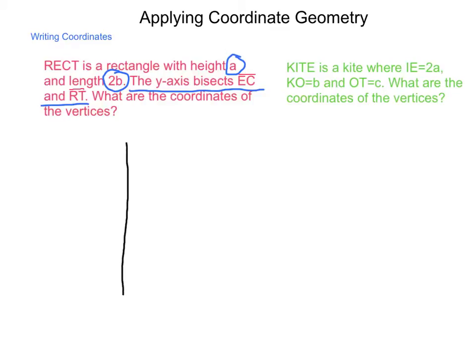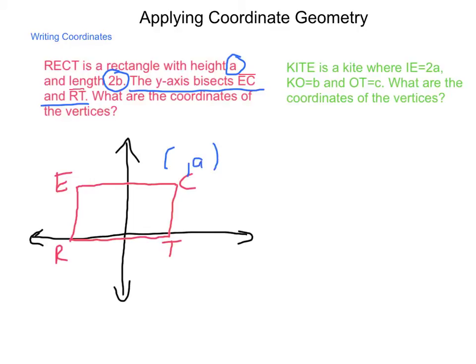So let's take a look at what this could appear like. First let's get our general XY axes. If the y-axis bisects EC and RT, then as I go through and draw in my rough rectangle, I know that RT and EC make up my horizontal parallel lines. So the only way I could have them both bisected is if they are completely horizontal. Now as we start to look at where the coordinates are, we have a height of A according to this information. That means the location, the y value, for both E and C is going to be A because the y-coordinate describes our height.